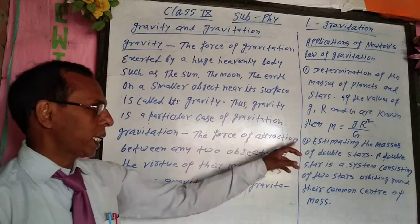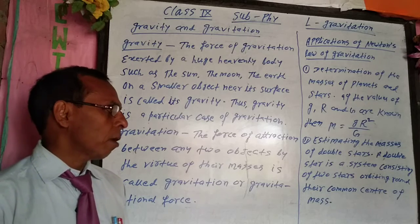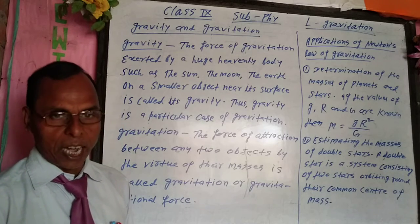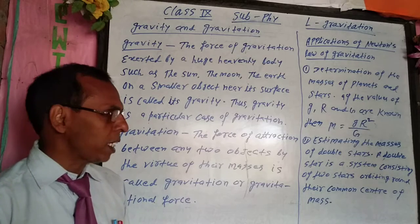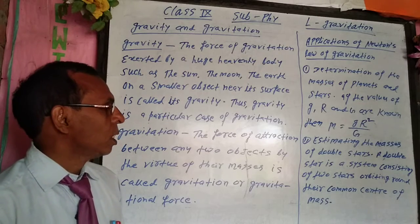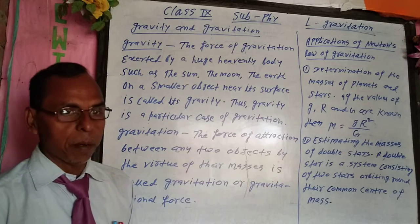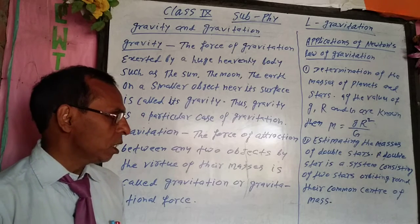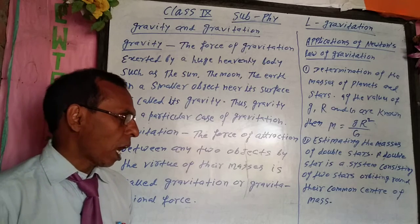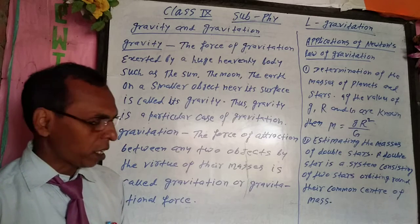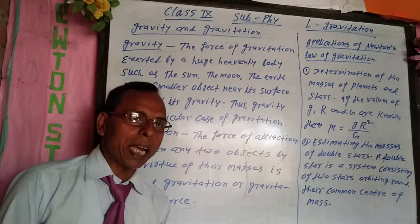Second use: estimating the masses of double stars. A double star is a system consisting of two stars orbiting around their common center of mass.